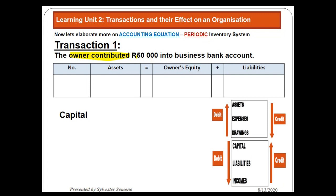Since the 50,000 came in the form of cash, the other account will be bank, because we put this amount into the business bank account. Remember, even if the contribution was equipment, we would still have capital — but instead of bank, we would say equipment. Just check what the owner contributed; as long as he brought something, it is capital — whether bank, equipment, land, building, or whatever he contributed.